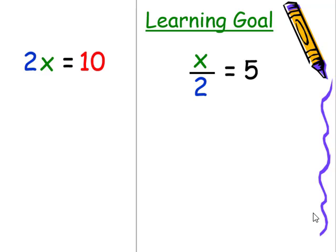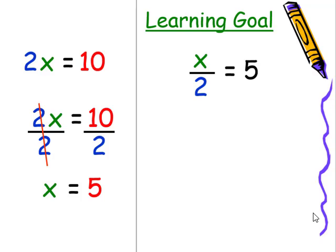Our learning goal for today is to be able to solve one-step equations by division or multiplication. In our first case, we have 2x equals 10. Therefore, we'll divide both sides by that coefficient of 2. The twos will cancel, leaving us with x equals 5.